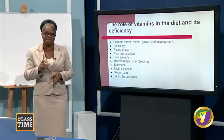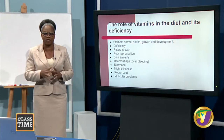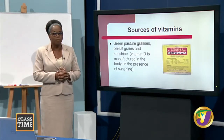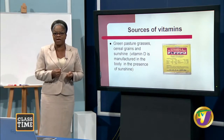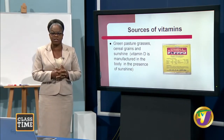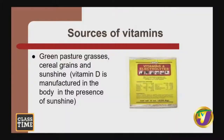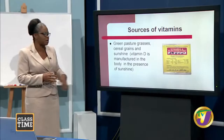Vitamins are very important in the diet of farm animals. The farmer can buy vitamins from the farm store or get supplements. Animals can also obtain vitamins from pasture grasses, the cereal grains they consume, and they can obtain vitamin D from sunshine.